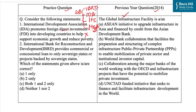The second statement is: International Bank for Reconstruction and Development provides commercial or concessional loans only to sovereign states or projects backed by sovereign states. This statement is correct, because IBRD provides loans only to sovereign states or projects backed by sovereign states, aimed at improving transportation and infrastructure, education, healthcare, etc. So with this, our correct answer is option B.